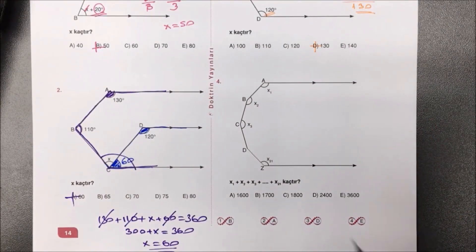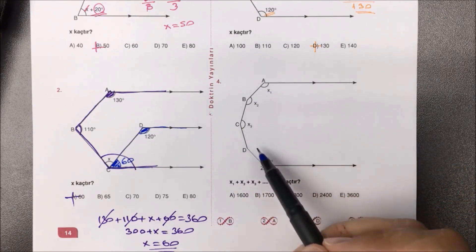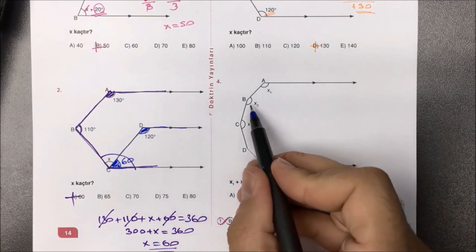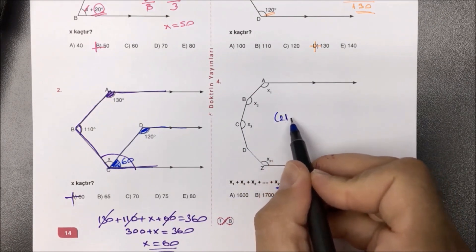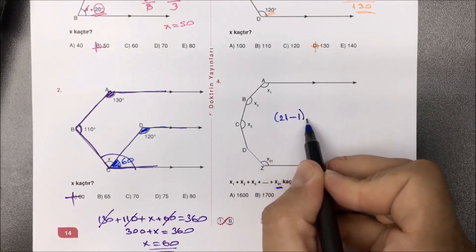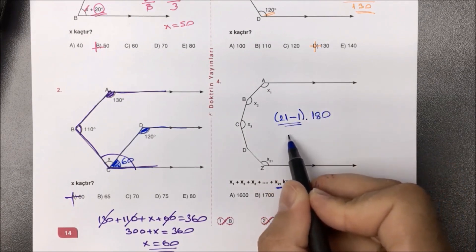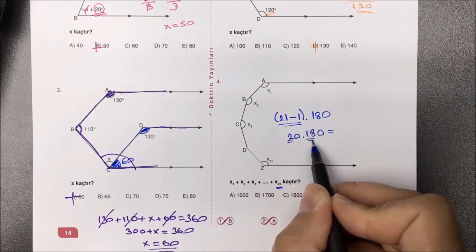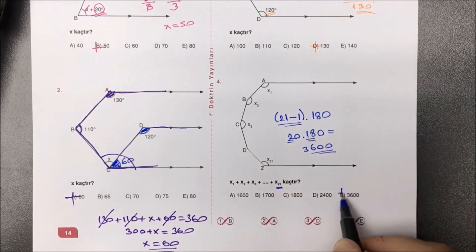Dördüncü sorumuzda X1'den X21'e kadar açılar var; bu açıların hepsinin toplamını bize kaçtır diye sormuş. Yapmamız gereken toplamdaki açı sayısını bulmak: 1'den 21'e kadar 21 tane açı var. Kuralımız açı sayısından 1'i çıkartıp 180'le çarpmak. 21'den 1'i çıkartacak olursak 20; 20 ile 180'i çarpacağız: 2×18 = 36, sıfırları yanına yazacak olursak aradığımız yanıt 3600 olarak bulunmuş olur.